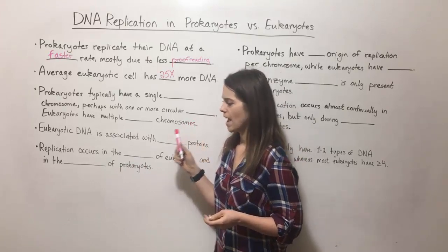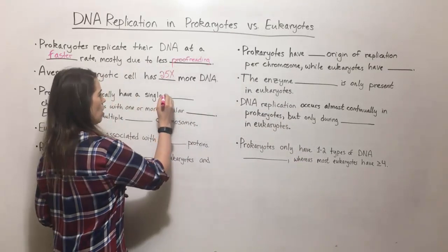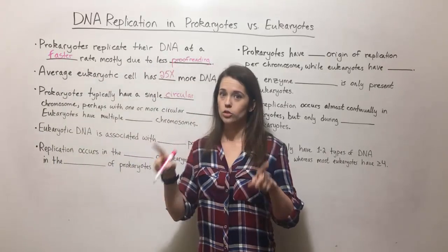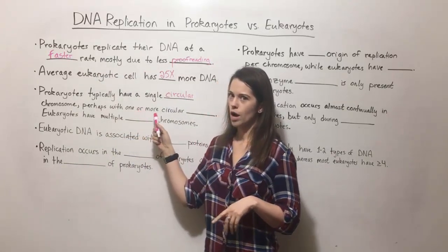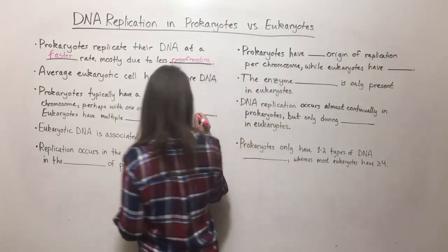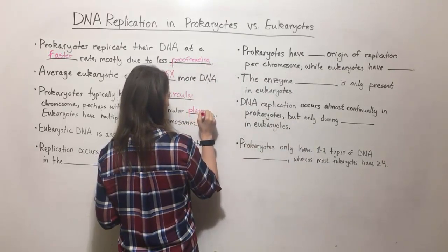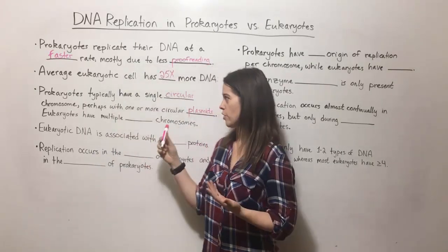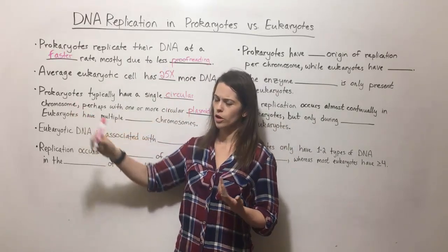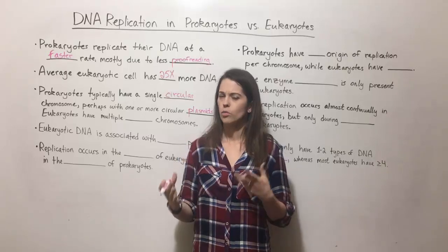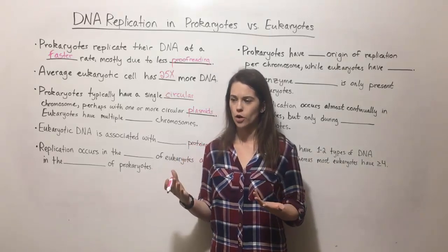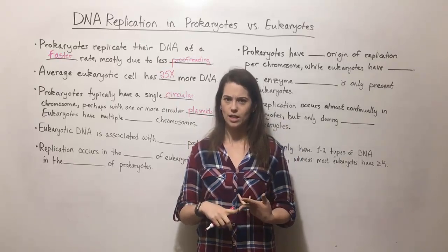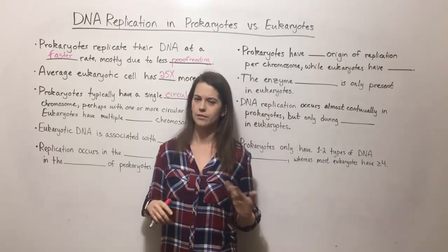Prokaryotes also typically have a single chromosome and it is almost always circular. So it's one circular chromosome in a prokaryotic cell, and they might also have one or more circular plasmids. Plasmids are extra-chromosomal — they're not part of the actual chromosome, and there can be one or more in a cell, or none. Plasmids are especially well known for carrying genes for toxins, antibiotic resistance, and other virulence factors.